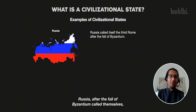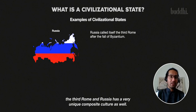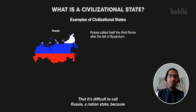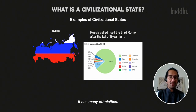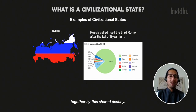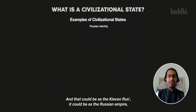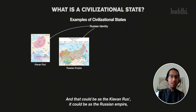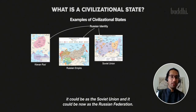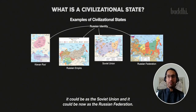Russia, after the fall of Byzantium, called themselves the third Rome, and Russia has a very unique composite culture. It's difficult to call Russia a nation-state because it has many ethnicities and many different subcultures, but it's tied together by a shared destiny — whether as the Kievan Rus, the Russian Empire, the Soviet Union, or now the Russian Federation.